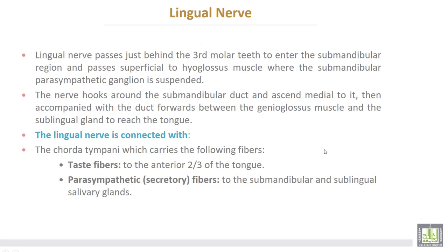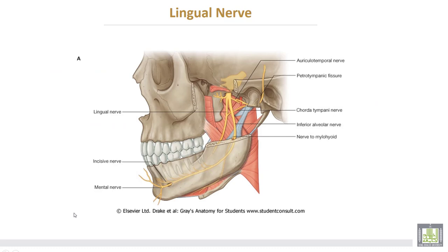The lingual nerve passes just behind the third molar teeth to enter the submandibular region and passes superficial to the hyoglossus muscle, where the submandibular parasympathetic ganglion is suspended. The nerve hooks around the submandibular duct and ascends medial to it, then accompanies the duct forwards between the genioglossus muscle and the sublingual gland to reach the tongue. The lingual nerve is connected with the chorda tympani, which is a branch from the facial nerve, and carries taste fibers to the anterior two-thirds of the tongue, as well as parasympathetic secretory motor fibers to the submandibular and sublingual salivary glands.